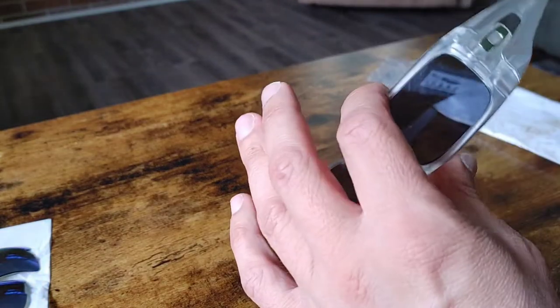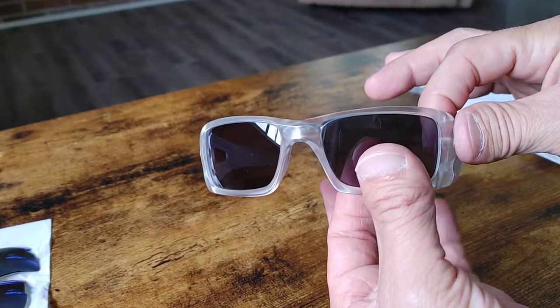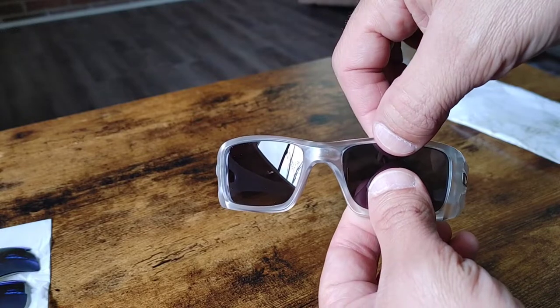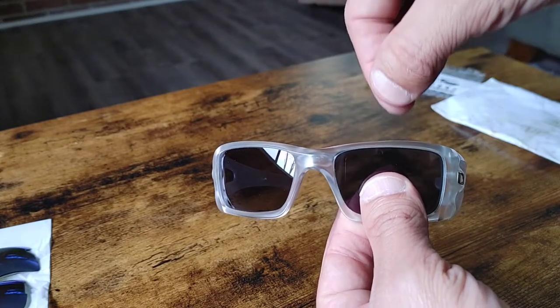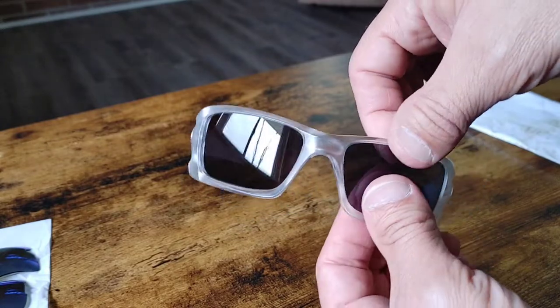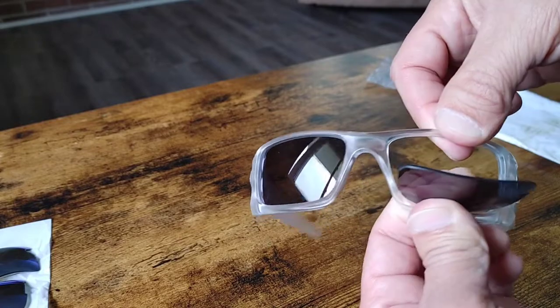I just want to show you how easy it is to replace the lenses. Here's the sunglasses. Put your finger and thumb on the lens, the other finger and thumb on the top of the frame. As you pull up on the frame, you're going to push from the back and the lens will pop right out. It's that easy.